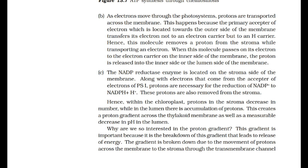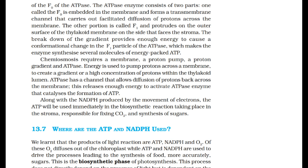This gradient is important because its breakdown leads to the release of energy. The gradient is broken down by movement of protons across the membrane to the stroma through the transmembrane channel of the F0 portion of the ATPase. The ATPase consists of two parts: F0, embedded in the membrane forming a transmembrane channel for facilitated diffusion of protons, and F1, which protrudes on the outer surface facing the stroma. The breakdown of the gradient causes a conformational change in F1, making the enzyme synthesize several molecules of ATP.